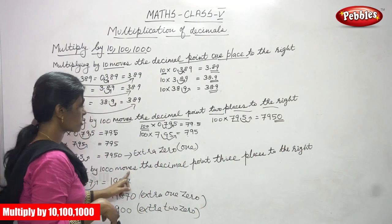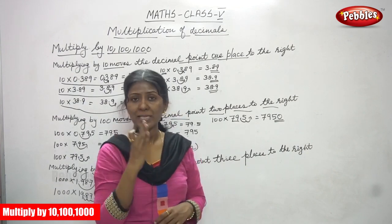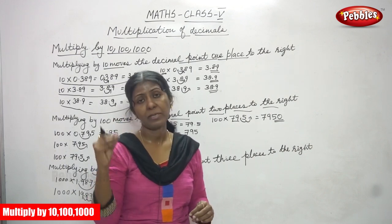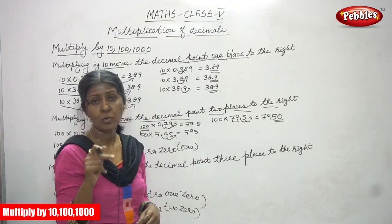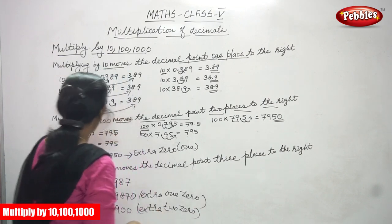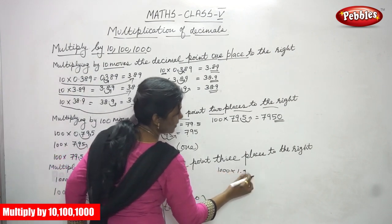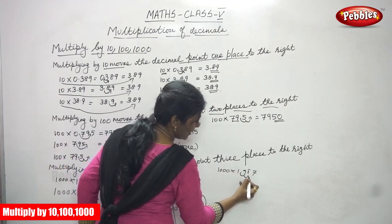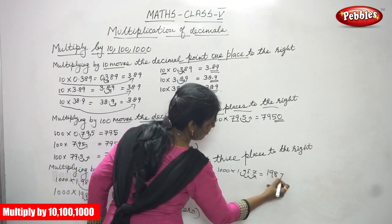Next, multiplying by 1000 moves the decimal point 3 places to the right. Because how many zeros in 1000? Three zeros. So you move the decimal point 3 places to the right side. For example, 1000 into 1.987. This point moves first, second, then third place — it becomes 1,987. This is the answer.